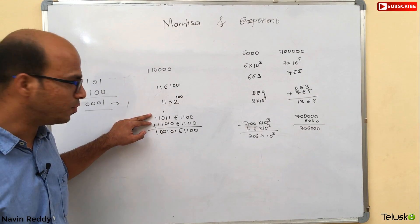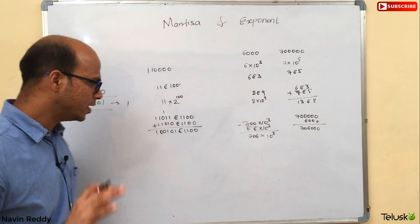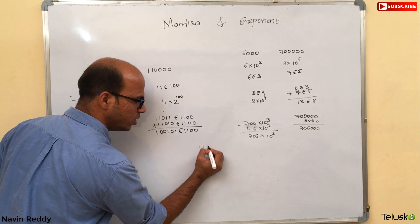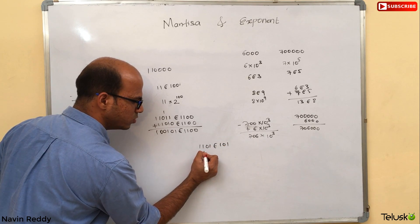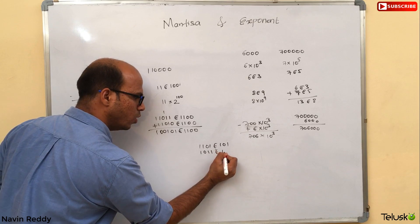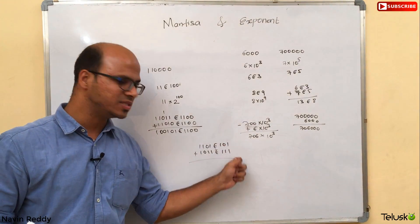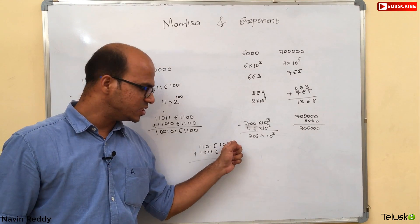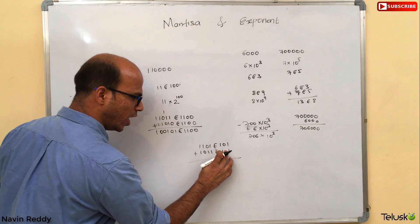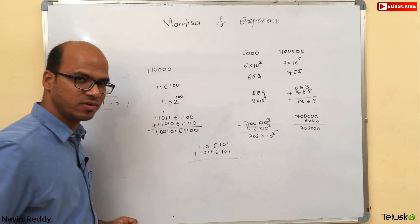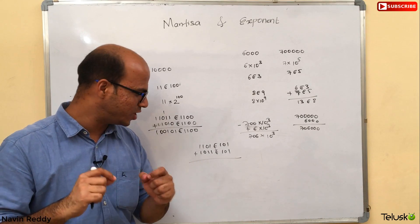So to summarize: if you want to add two numbers, make sure both exponents are the same. For your assignment: given 101E101 and 1011E111, add these two values. This is 5 and 7 in decimal, so the difference is 2 — shift two bits accordingly. Post your answer in the comment section.